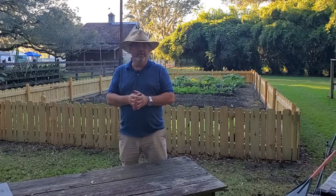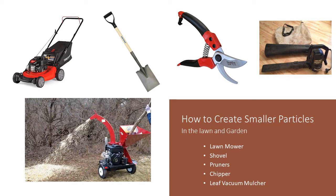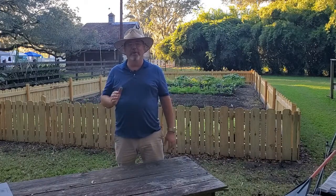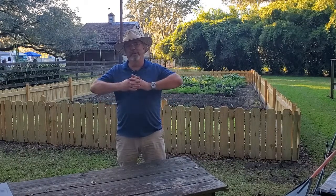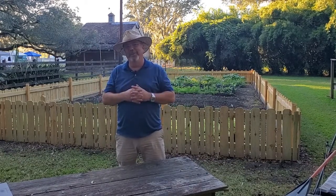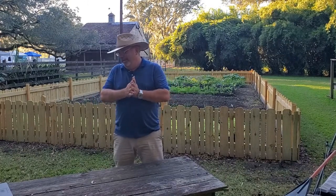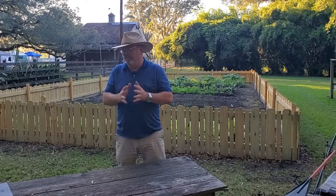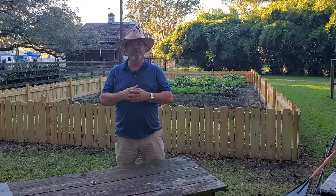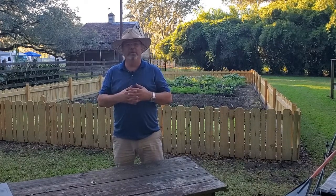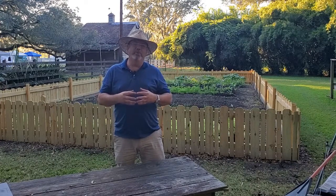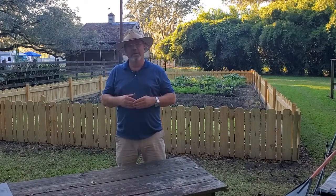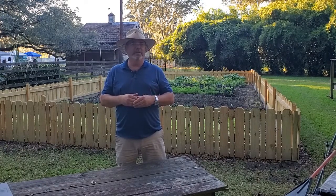So what can we do to create smaller particles? In the garden we have a few good options: a lawn mower, a sharp shovel, hand pruners. They actually make leaf blowers that can vacuum leaves and shred them at the same time — which seems like the only good blower in the world to me, since regular blowers just move dirt around. And then you have chippers and shredders like what tree companies use; there are homeowner versions — please be careful using one — but they can take limbs and leaves and really chop them into small pieces.